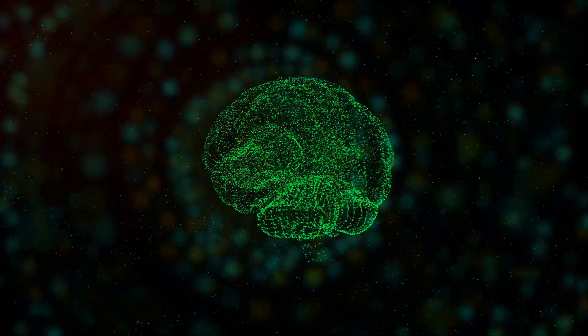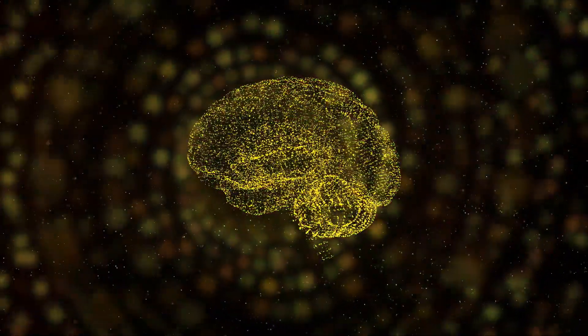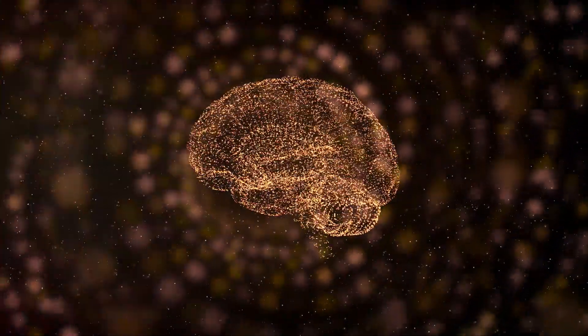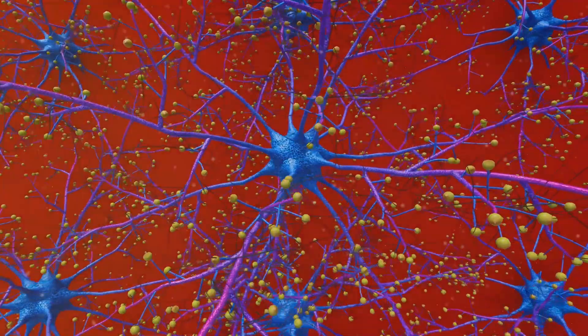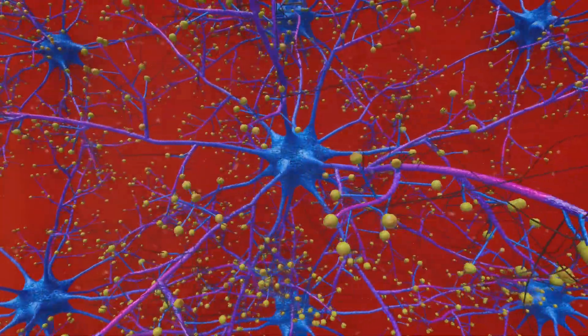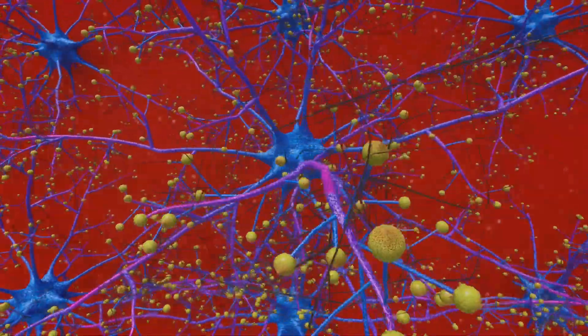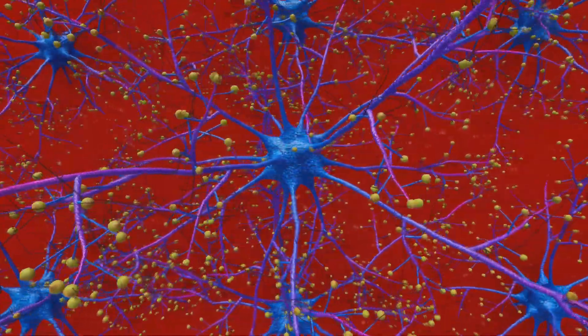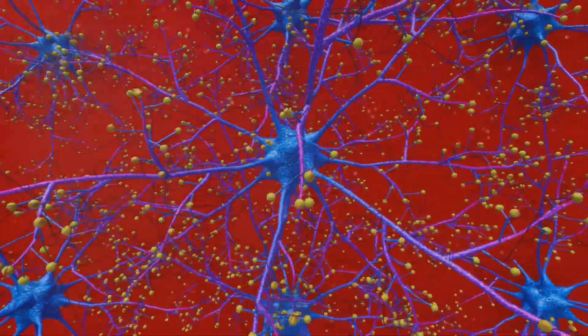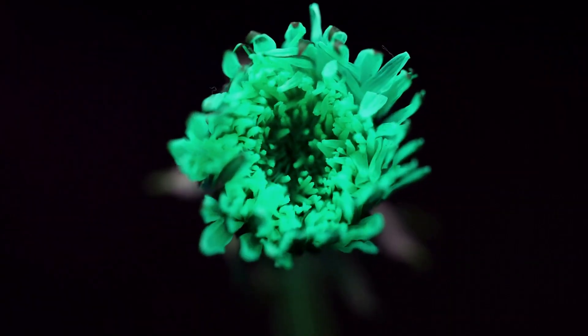Take, for instance, the concept of the universe as a giant brain. It's an intriguing idea, suggesting that the universe operates in ways similar to our own neural networks. Or consider the belief of Erwin Schrödinger, the brilliant physicist who proposed that there's just one collective consciousness. His ideas have had profound influences, even shaping the field of molecular biology.